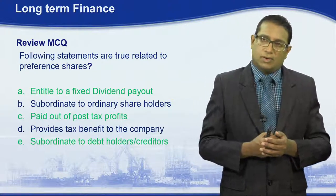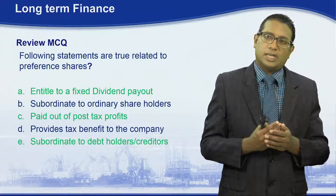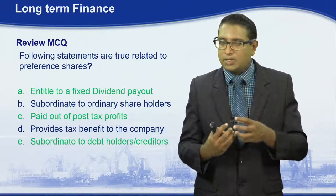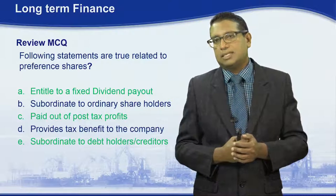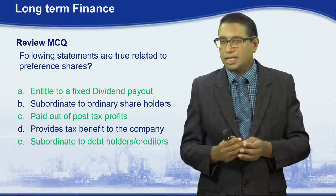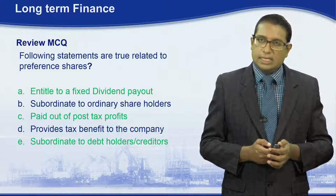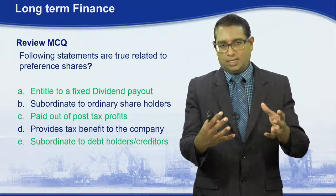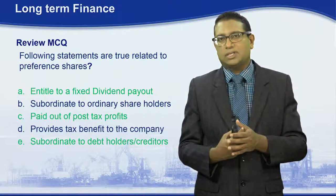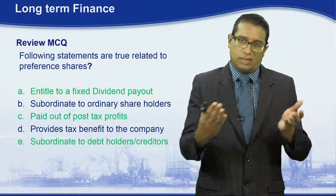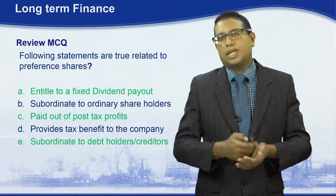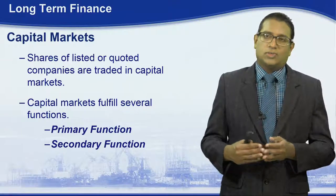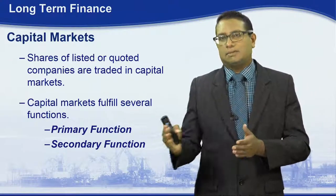The other correct answer is that preference shares are paid out of post-tax profits. Preference shares do not provide a tax benefit to the company — unlike debt financing, which does provide a tax benefit. The last correct answer is that preference shares are subordinate to debt holders or creditors in case of liquidation. Now we have finished the first part of the lecture. Let us move on to the next part related to long-term finance.